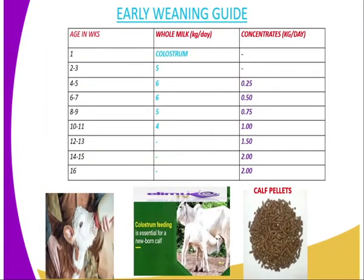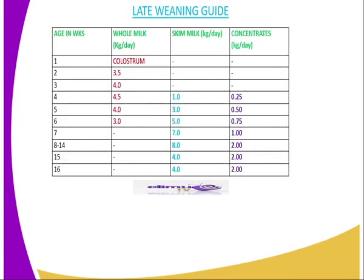Now the second guide is the late weaning program. In the early weaning guide, weaning was carried out at weeks 12 to 13. In the late weaning guide, you can see that weaning is done at week seven — this is what we refer to as late weaning. In this program, colostrum is provided first, followed by whole milk and skimmed milk, and concentrate is introduced on week four along with skimmed milk.